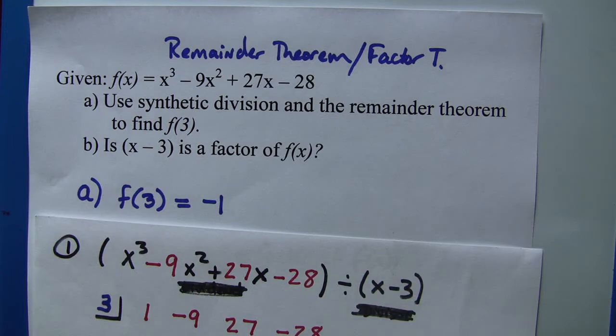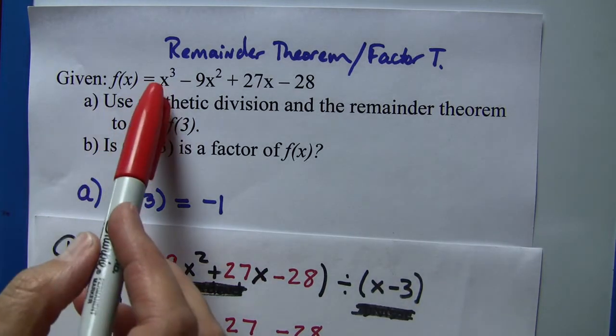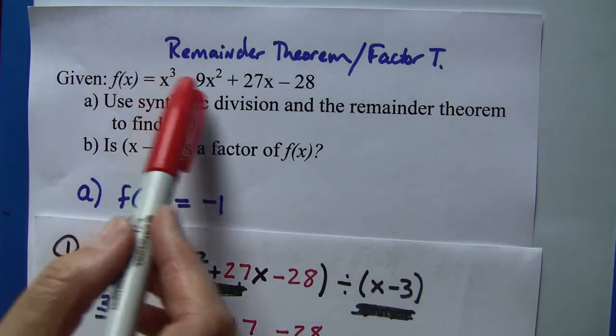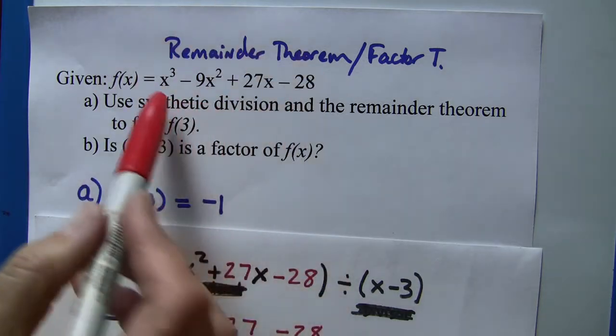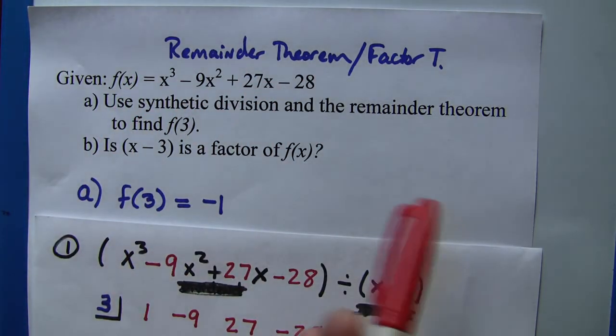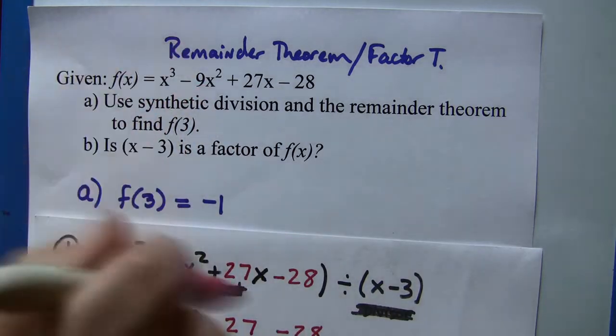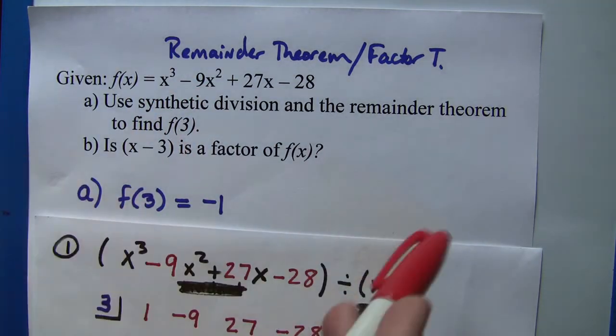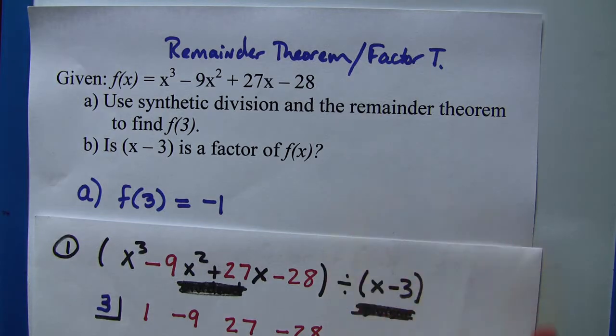So you could take your calculator out, you could put this polynomial in your y equals button, you could graph it, and every time it crosses the x-axis, that's a zero, or a solution, or a root.